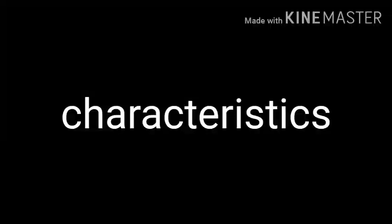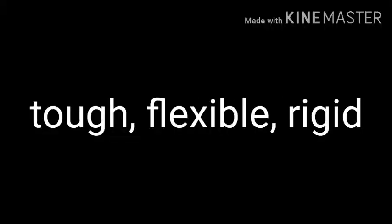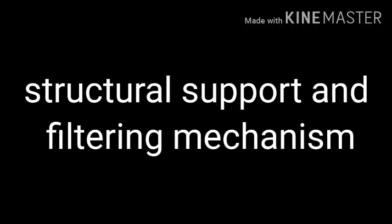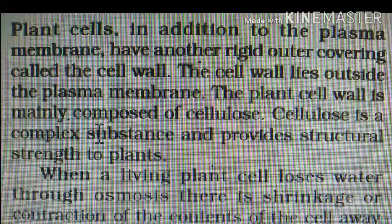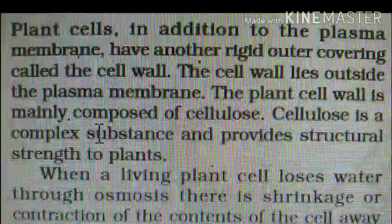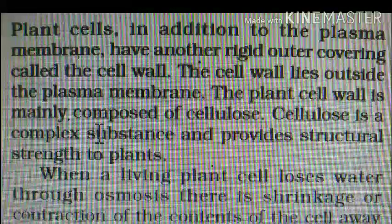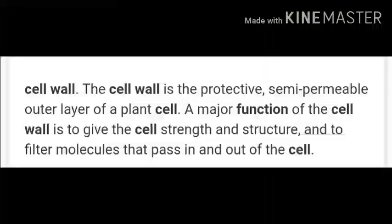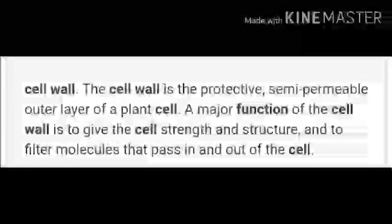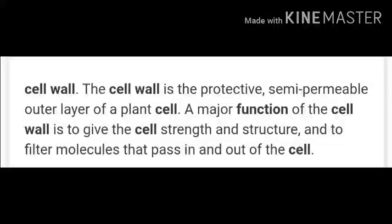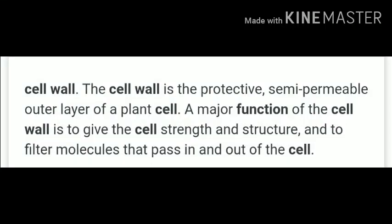What are the characteristics of a cell wall? It can be tough, flexible and sometimes rigid. It provides the cell with both structural support and protection and also acts as a filtering mechanism. A cell wall is the wall of a cell in plants, bacteria, fungi, algae and some archibacteria. The cell wall is the tough, usually flexible but sometimes fairly rigid layer that surrounds some types of cells. It is outside the cell membrane and gives the cells support and protection as well as acting as a filter.